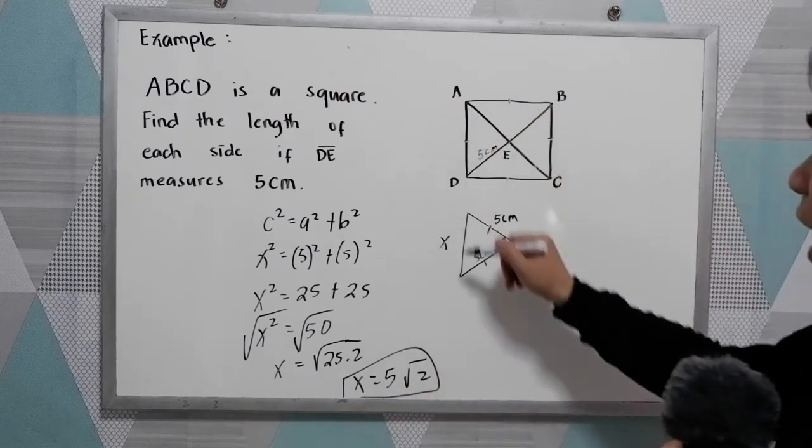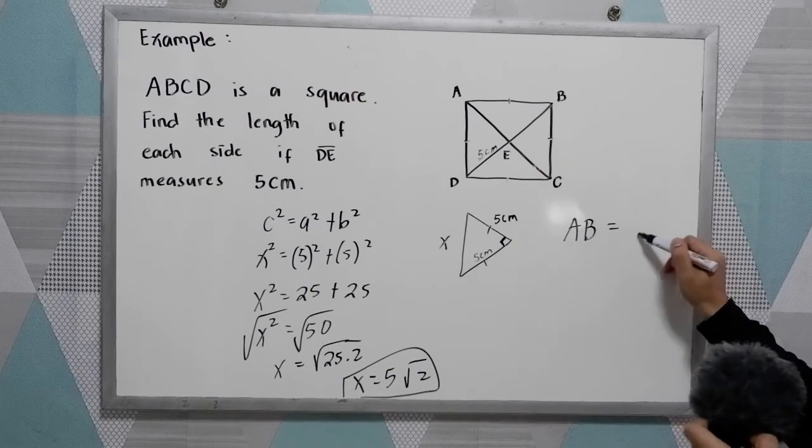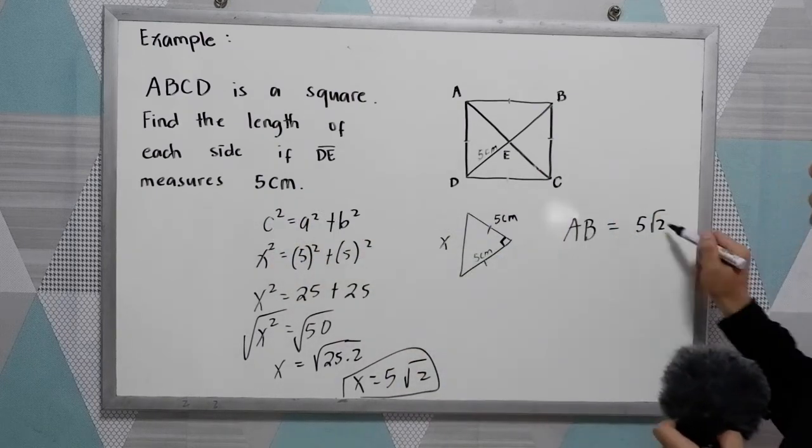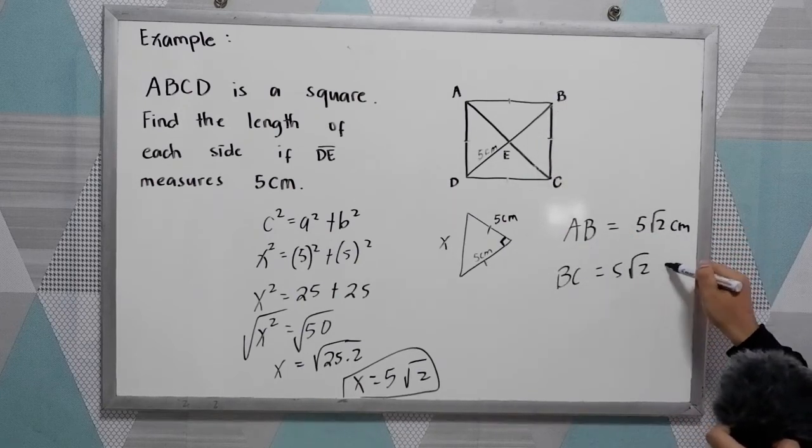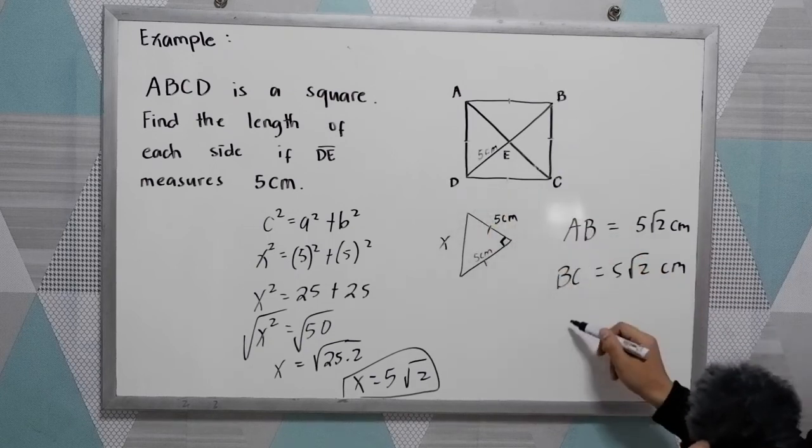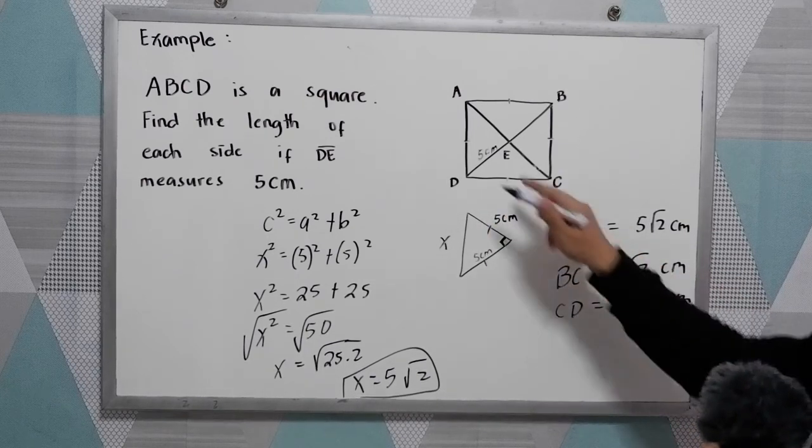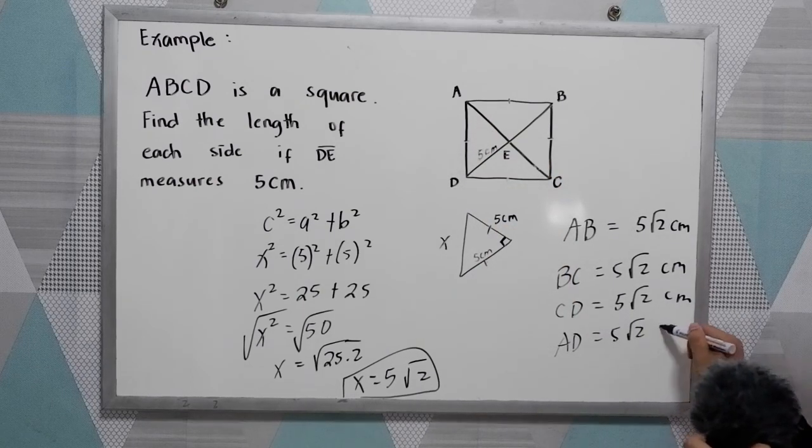Therefore, each side, AB is equal to 5 square root of 2 cm. BC is equal to 5 square root of 2 cm. CD is equal to 5 square root of 2 cm. And AD is equal to 5 square root of 2 cm.